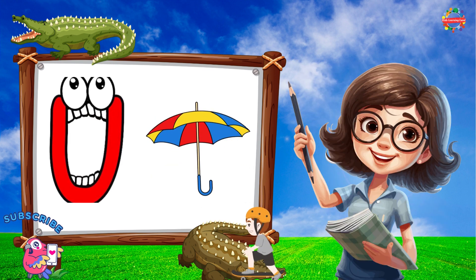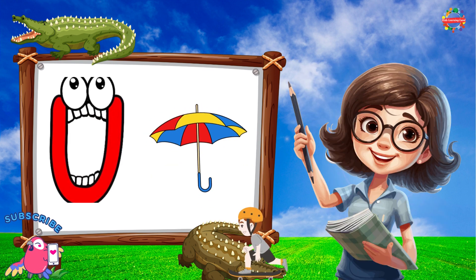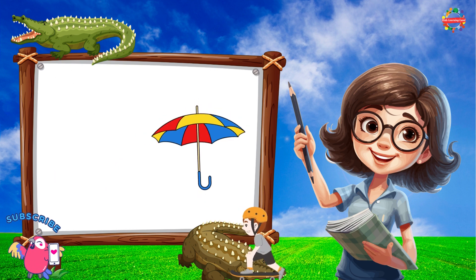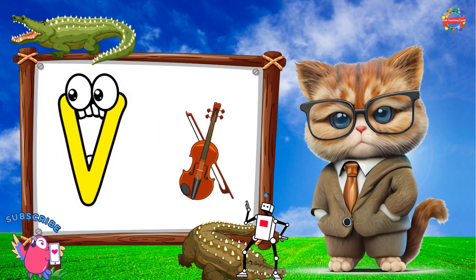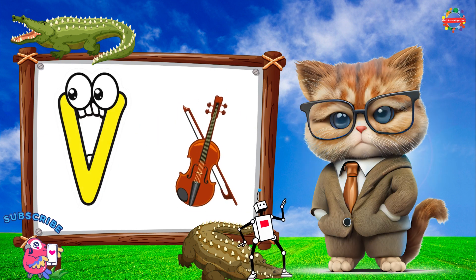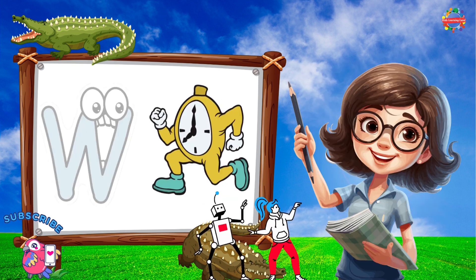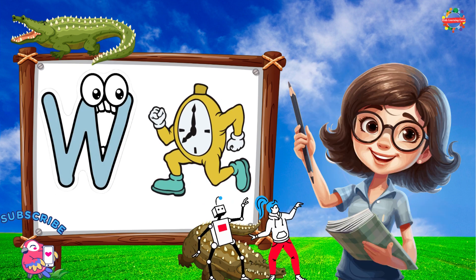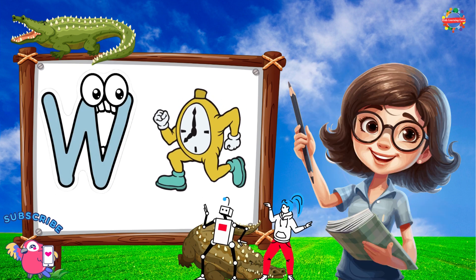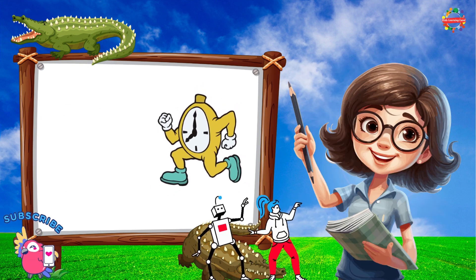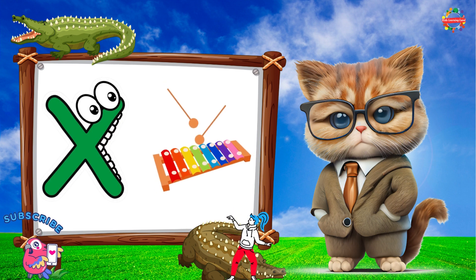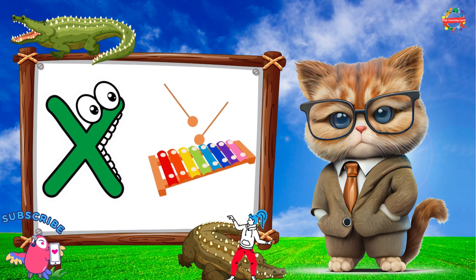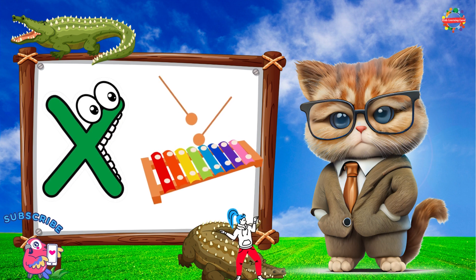U is for Umbrella, U-U-Umbrella. V is for Violin, V-V-Violin. W is for Watch, W-W-Watch. X is for Xylophone, X-X-Xylophone.